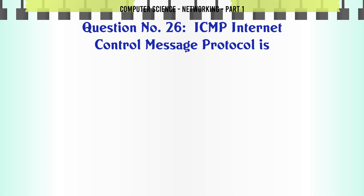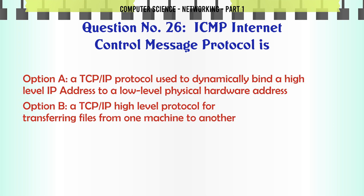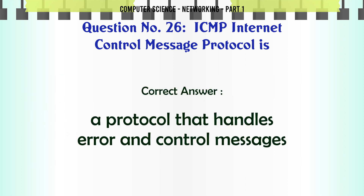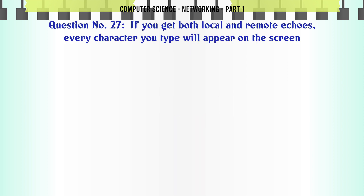ICMP (Internet Control Message Protocol) is: A. A TCP/IP protocol used to dynamically bind a high level IP address to a low level physical hardware address. B. A TCP/IP high level protocol for transferring files from one machine to another. C. A protocol used to monitor computers. D. A protocol that handles error and control messages. The correct answer is: A protocol that handles error and control messages.